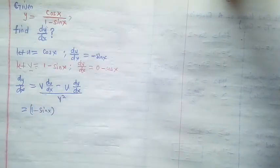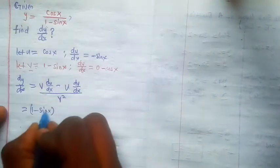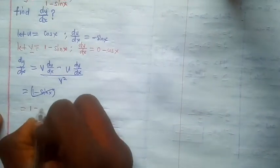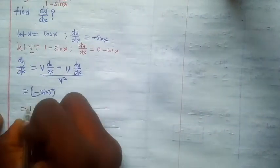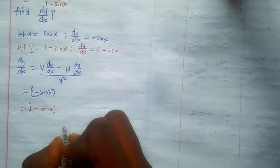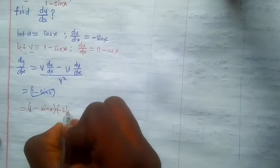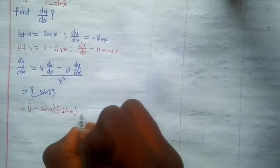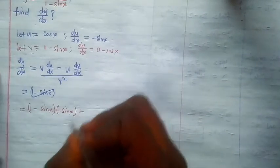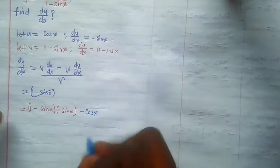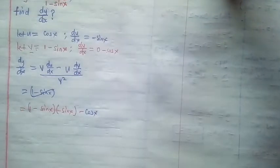We quickly substitute wherever we find. V is 1 minus sine x; du/dx is negative sine x; minus u on its own—u is cosec x—times dv/dx.